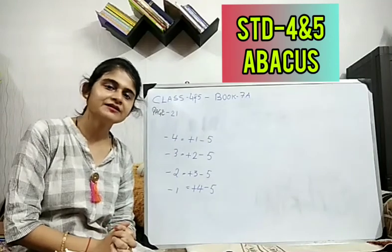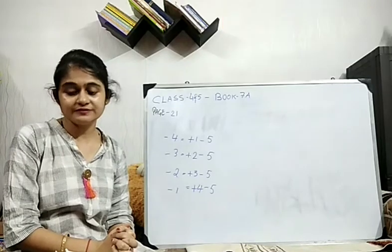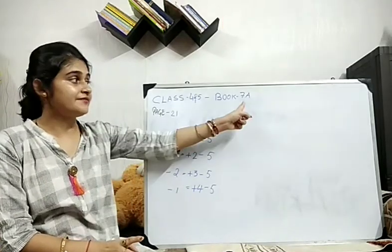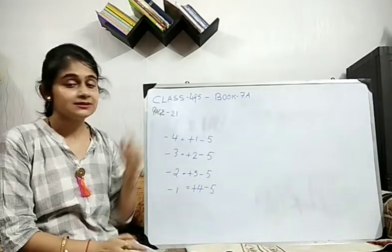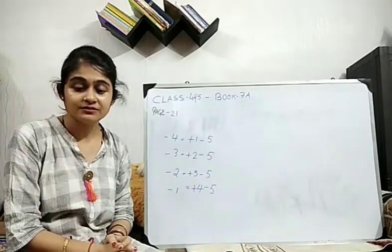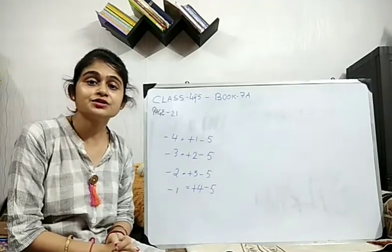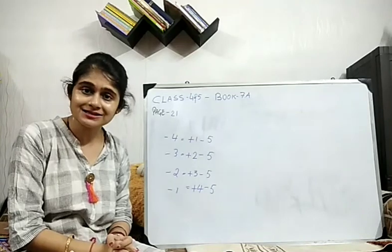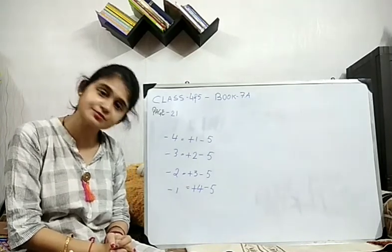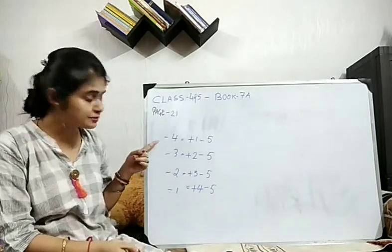Welcome back for 4 and 5 in your Abacus class. Today what we will do, you will take out your book 7A, page number 21. In page number 21 we will do visualization, formula, revision of small frame minus formulas. Remember in the last class we have done plus formulas of small frame. Today we will do small frame minus formulas. What are the formulas?